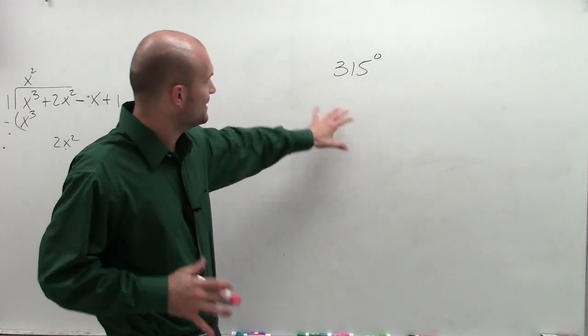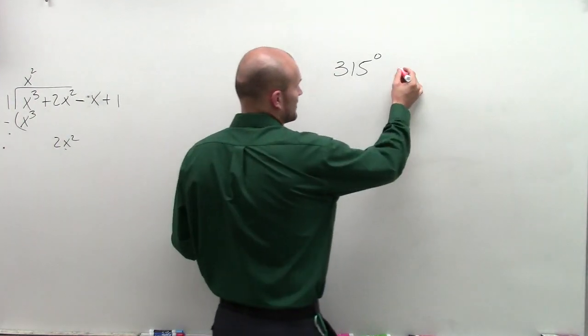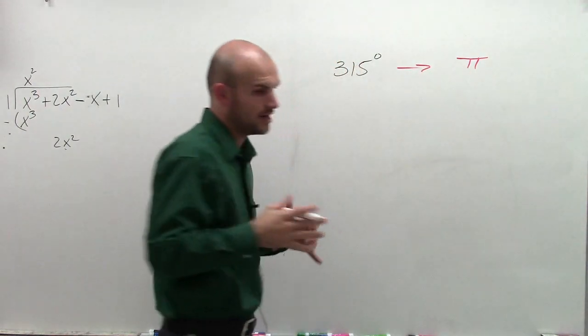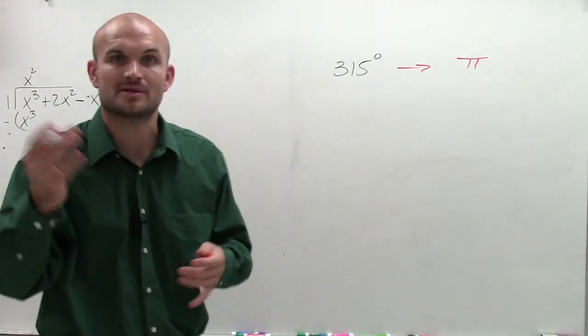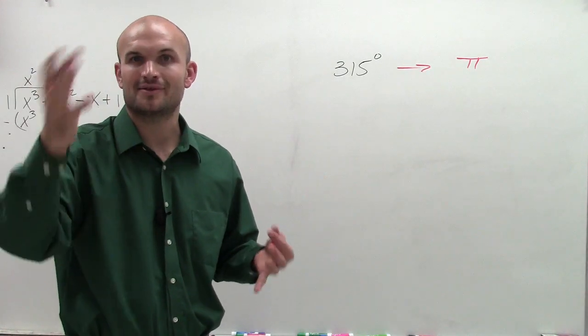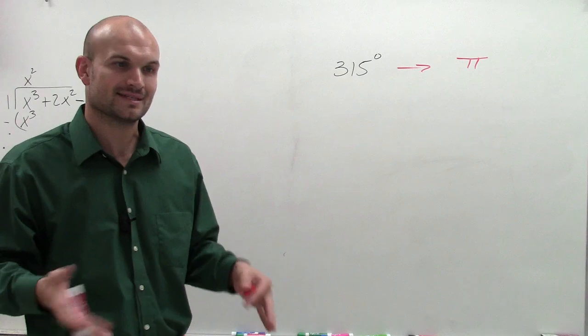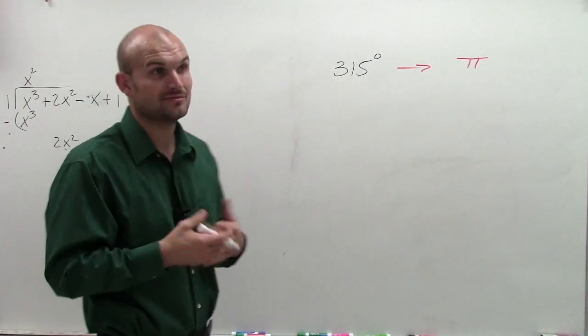So what we need to do is take our degrees and make it into radians. And when we're talking about radians, I'm usually going to have it in terms of pi, because remember, halfway around the circle is pi. So when we're talking about radians, we're going to be using it in terms of pi.